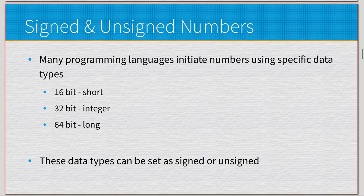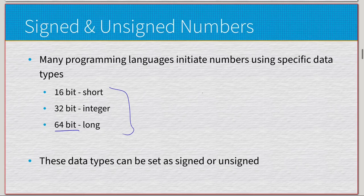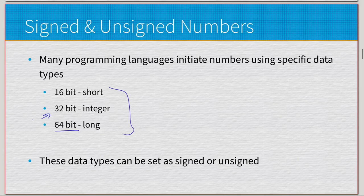Moving on to signed and unsigned data. We don't always want the full bus width of our computer — we don't always want to utilize a full word size. On a 64-bit computer there's a lot of size, so in modern practice you have integers at 32 bits, shorts at 16 bits, and longs at 64 bits. We don't always utilize all 64 bits because it's a bit much, and operations inherently take longer when operating on more data. 32 bits is a good median — half your actual word length.